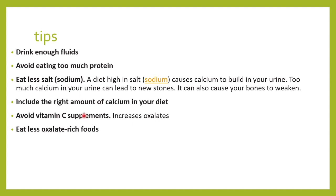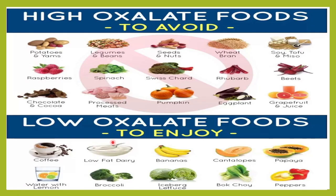You should include the right amount of calcium — not more, not less. You should avoid taking vitamin C supplements because that will increase oxalates in the urine. You should also eat less of oxalate-rich foods, such as potatoes, yams, pumpkin, eggplant, and processed meat, all of which have high oxalate content and increase the chances of developing calcium oxalate stones.